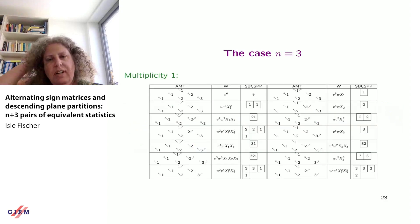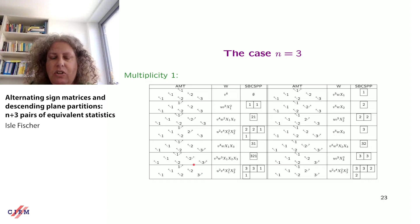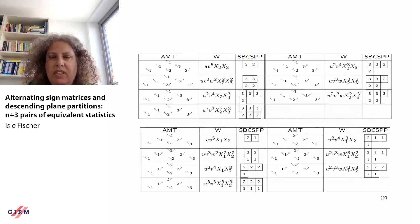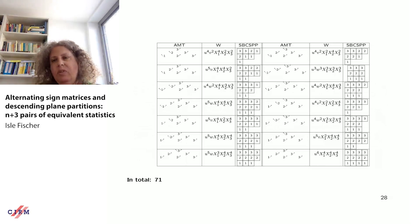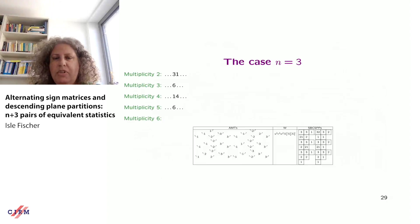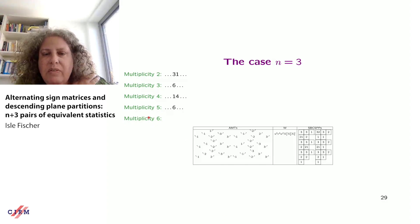For n=3 there are many weights with multiplicity one, and for those you know exactly what the weight-preserving bijection must be. In total, 71 weights appear with multiplicity one. For 31 weights the multiplicity is two, for 6 weights it's three, for 4 weights it's 14, for 6 weights it's five, and one weight has multiplicity six.